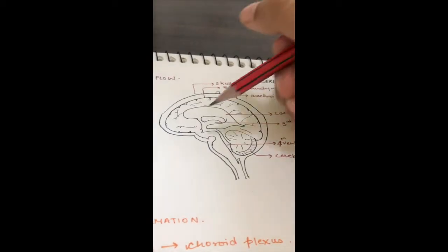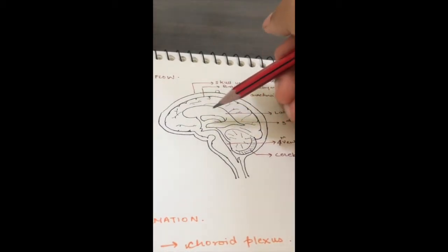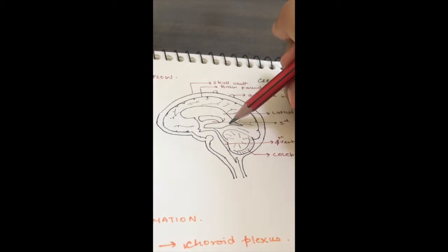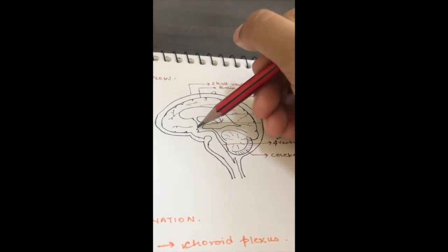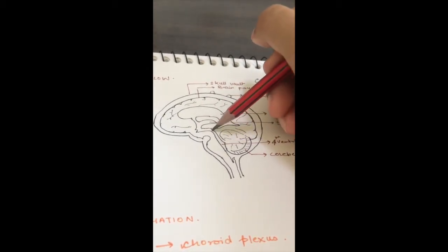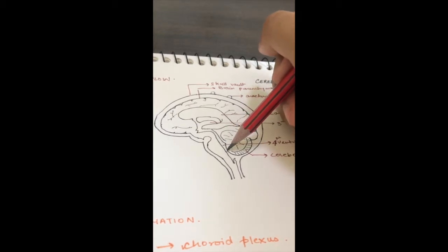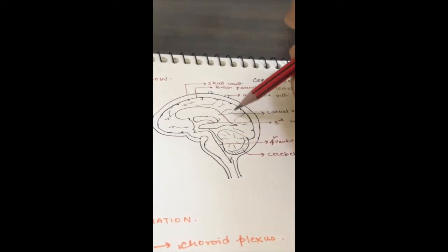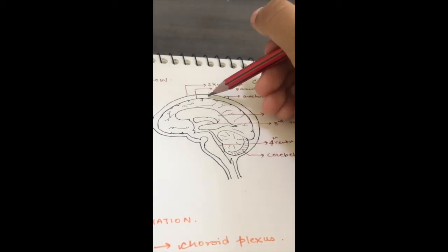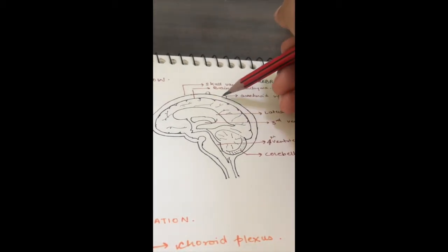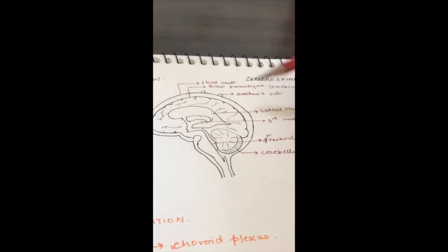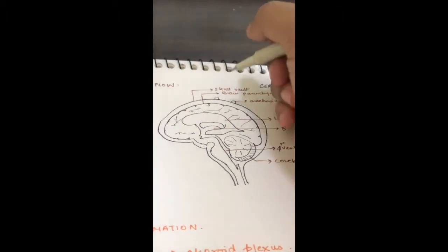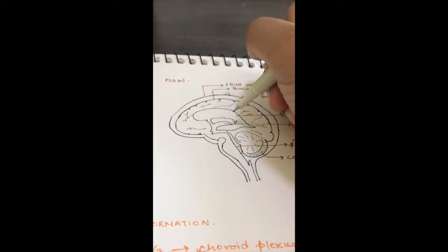Here I have a sagittal section of the brain. This is the lateral ventricle, the third ventricle, the aqueduct of Silvius, and the fourth ventricle. This is the brain parenchyma, this is the skull vault, and here are the arachnoid villi. Now let's talk about the flow of CSF.